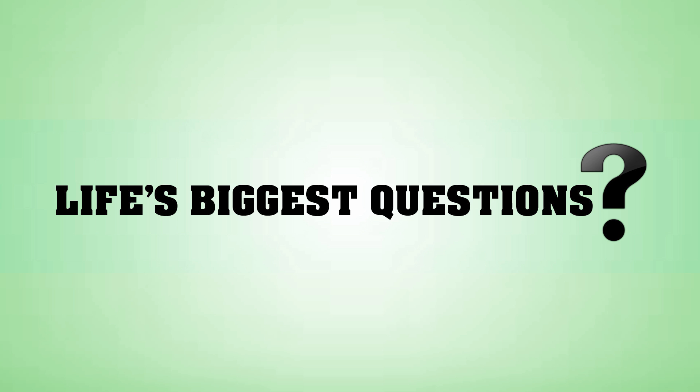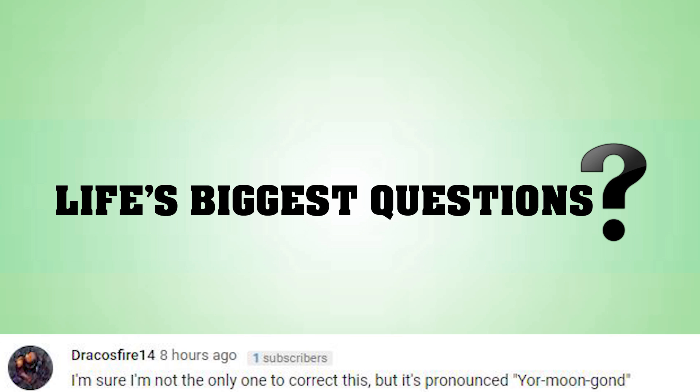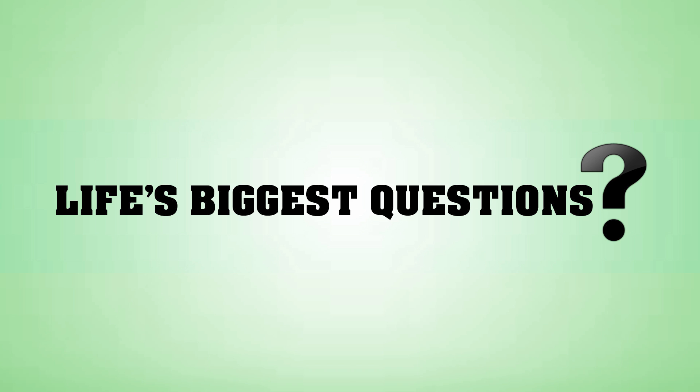First off, in relation to our recent SCP-3000 vs Jormungandr video, Dracos514 says, I'm sure I'm not the only one to correct this, but it's pronounced Jormungand. Eh. Sorry pal. I mean, you can call the World Serpent whatever you like, but under both Old Norse and Icelandic, it's Jormungandr, although my dialect is admittedly abysmal. By all means though, whatever works for you buddy. You just do you, Dracos514. Good job.